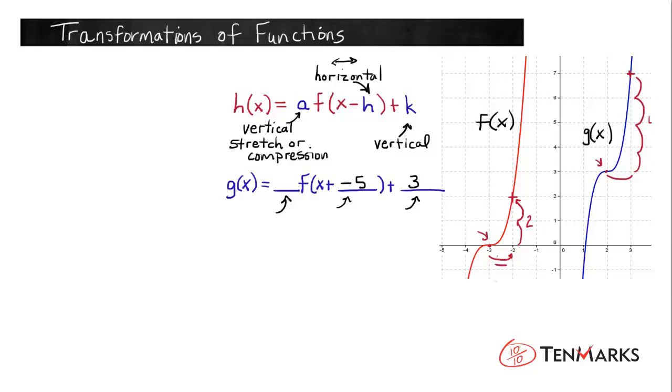So instead of going up 2, we went up 4. That tells us that f of x has been stretched by a scale factor of 2 because 4 is twice as big as 2. Let's take a look at f of x and g of x together on one graph without the translations, without the horizontal and vertical shifts, and that might help make this a little clearer.